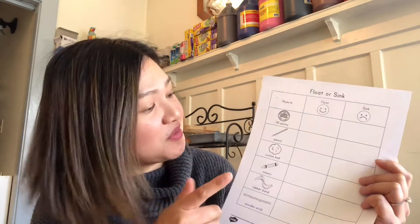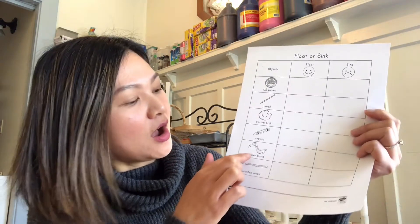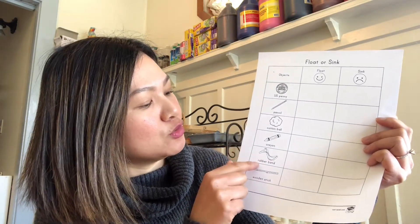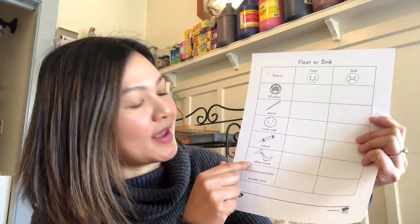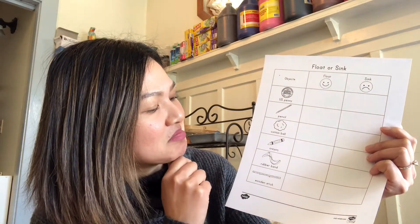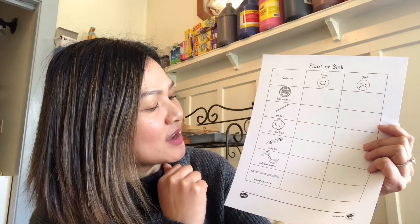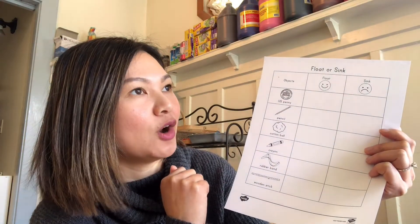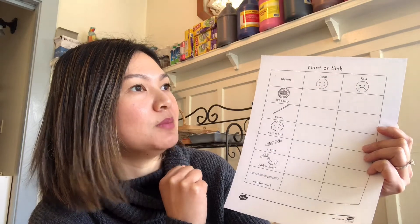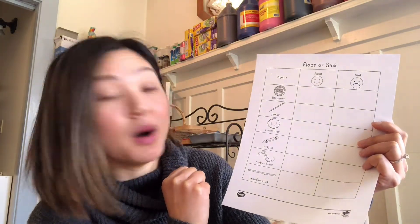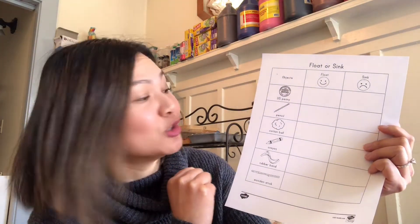So if you don't have, let's say, a rubber band, maybe you have a hair tie that you can use instead. And if that's not available either, you can just choose anything else that you can find in your home — maybe a ball will do too.